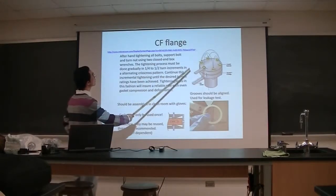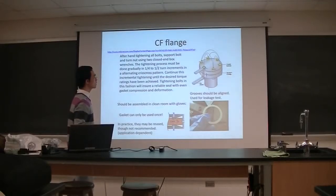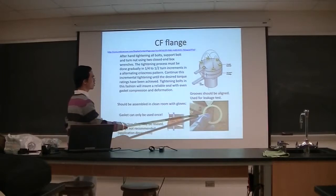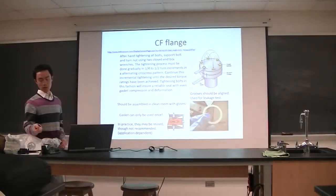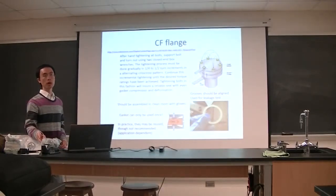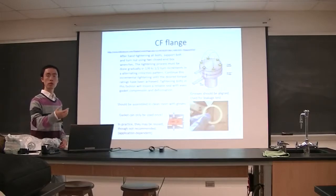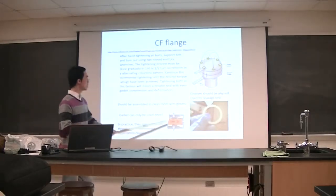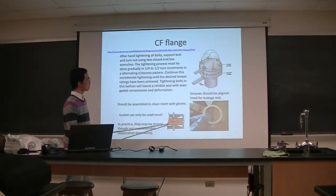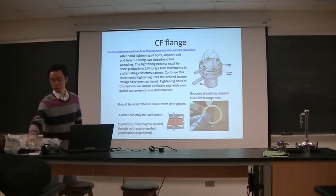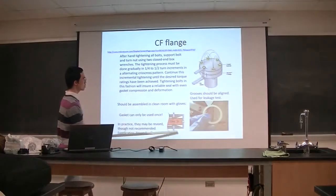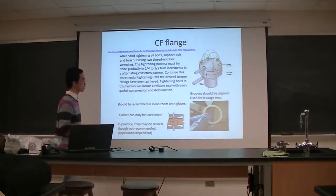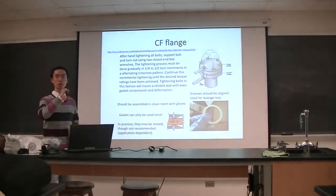Here is how to assemble a CF flange. First, you need to go into the clean room and wear gloves, because this is a vacuum chamber — if you introduce dust, you cannot reach high vacuum and may destroy your vacuum pump. The gasket is normally made of very soft copper. In the flange, there is a blade on each side. When you press and tighten, the blade gets into the gasket — this is how you seal it.